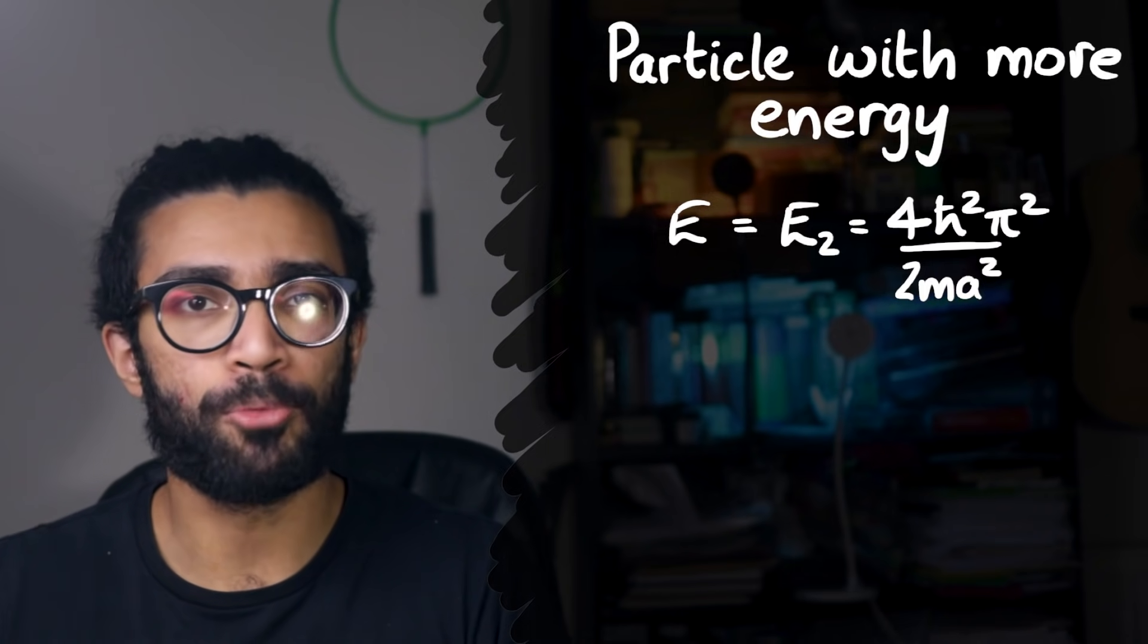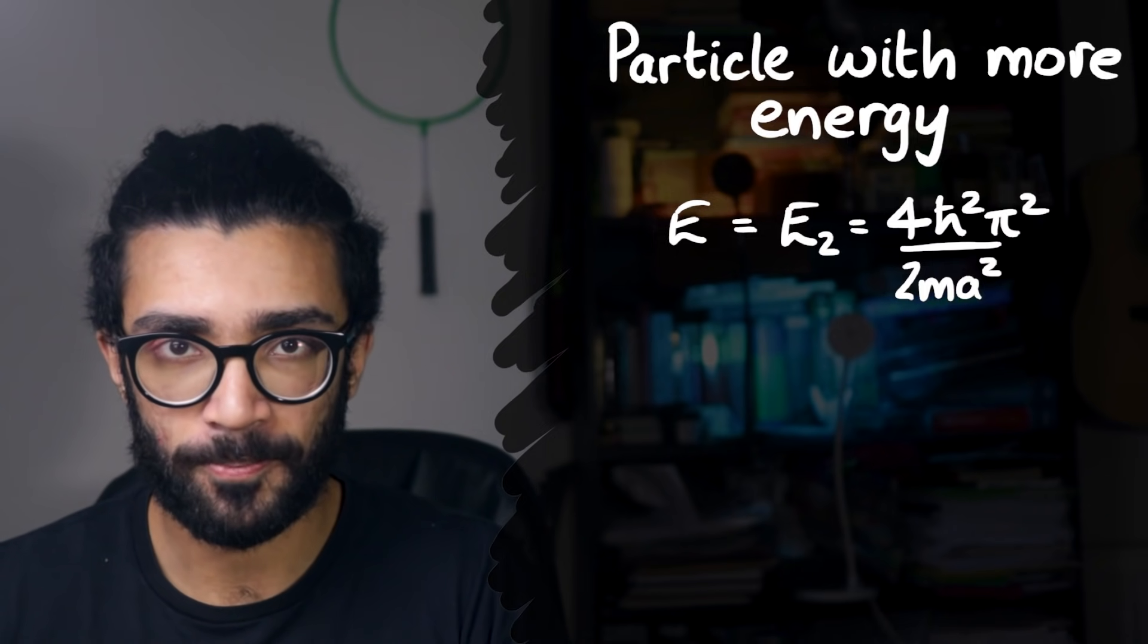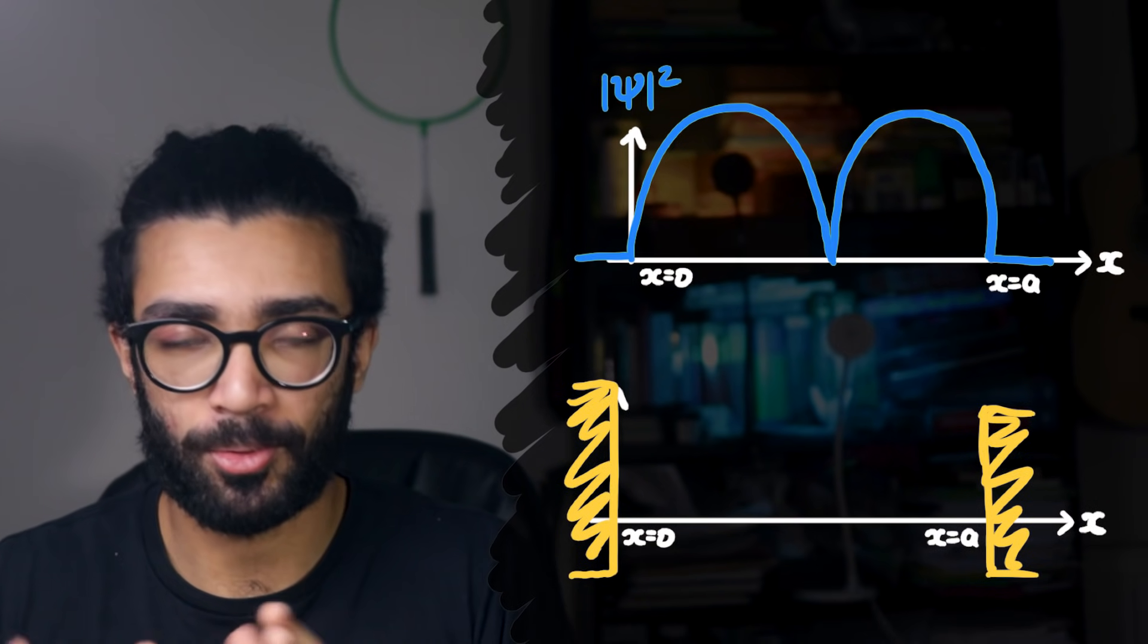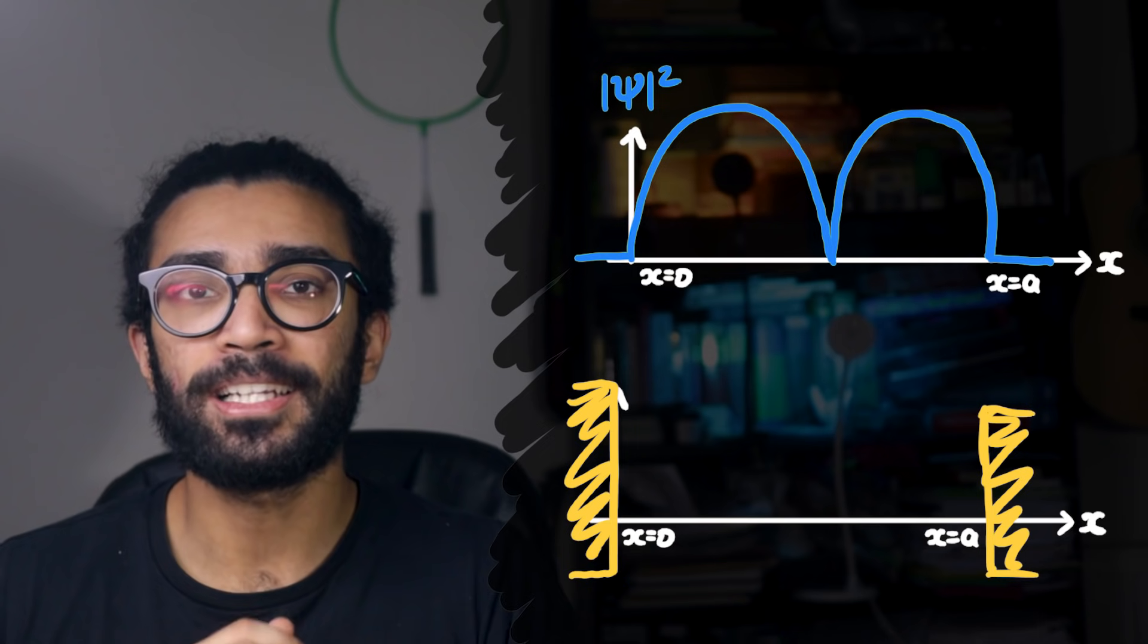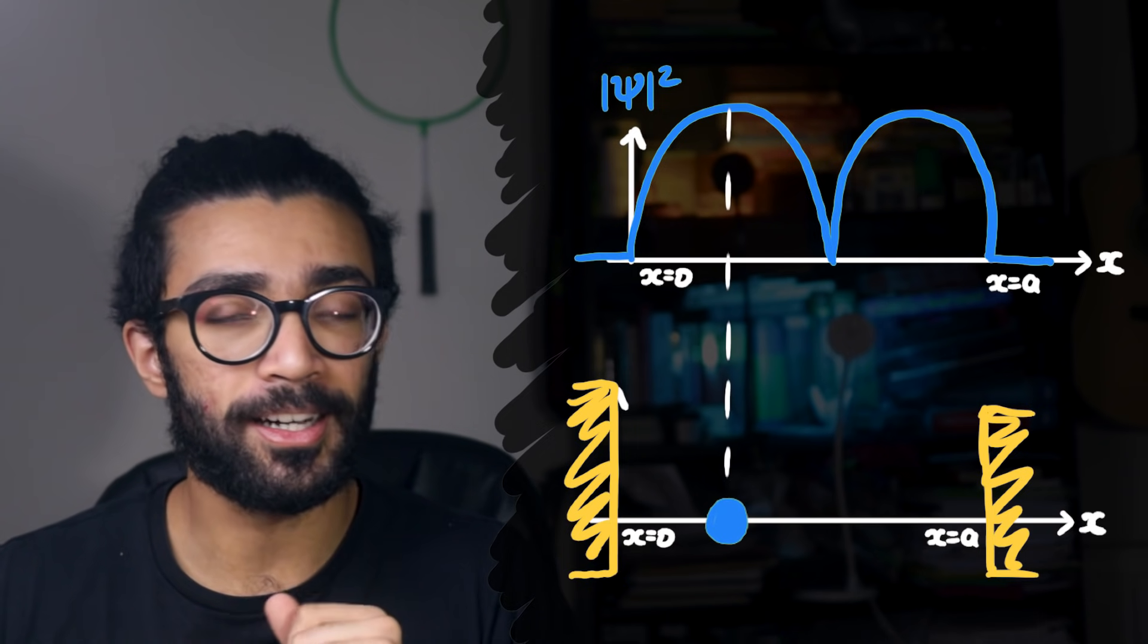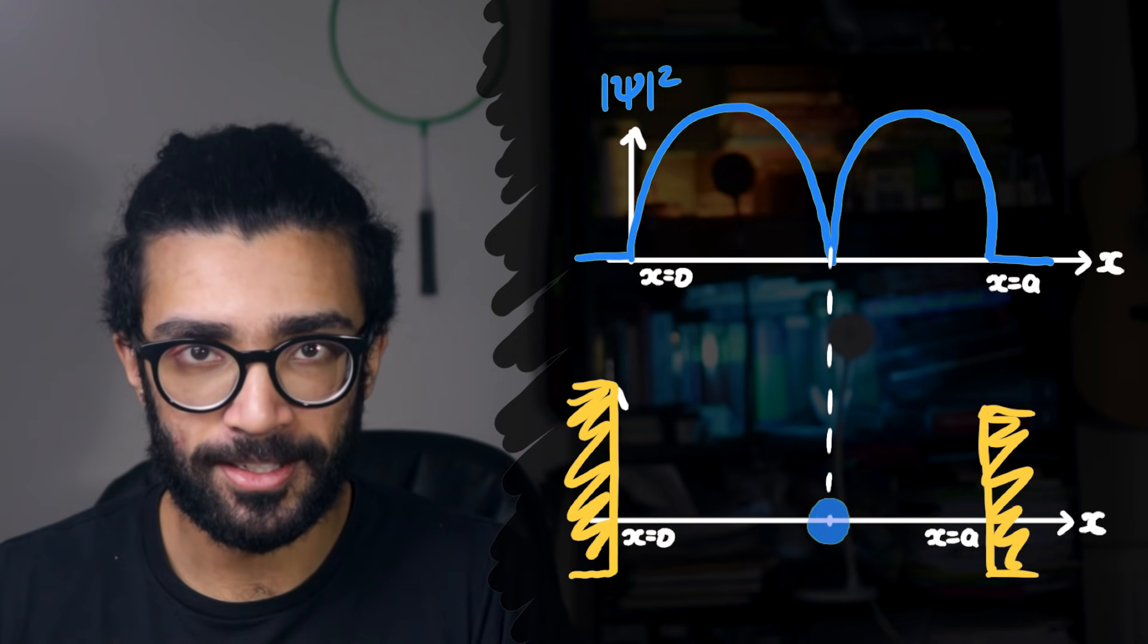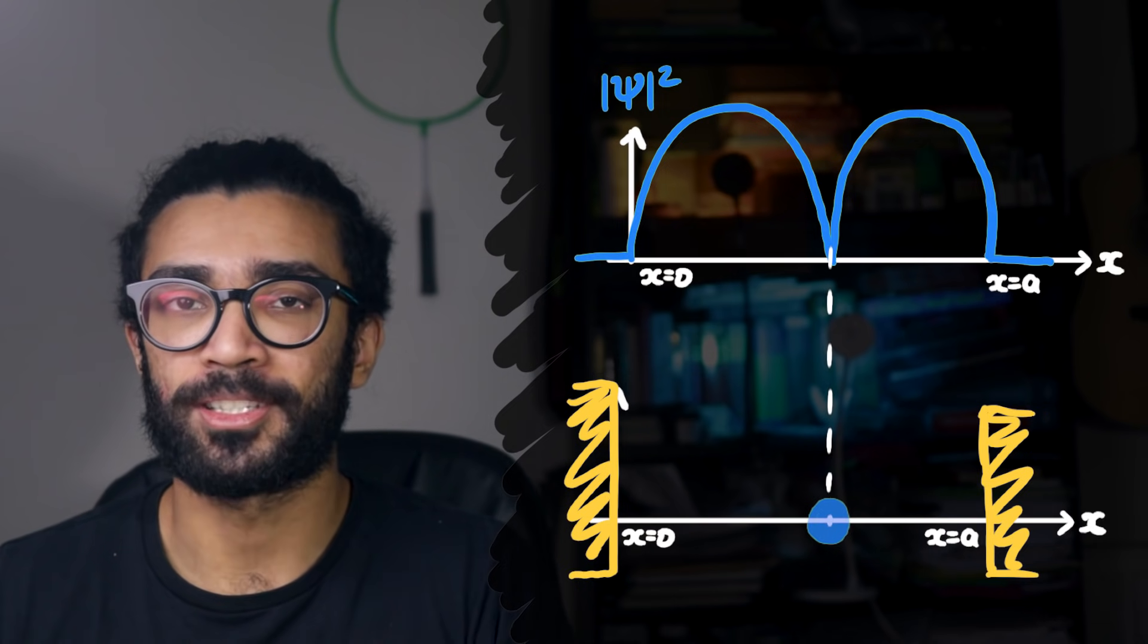But let's now consider the second energy level, where this particle has slightly more energy than the lowest energy level. But in that case, the wave function looks like this. When we square it, technically take a square modulus, it looks like this. And that tells us that we're highly likely to find the particle either here or here, but absolutely no chance of finding it in the very centre. Strange, right? Super interesting.